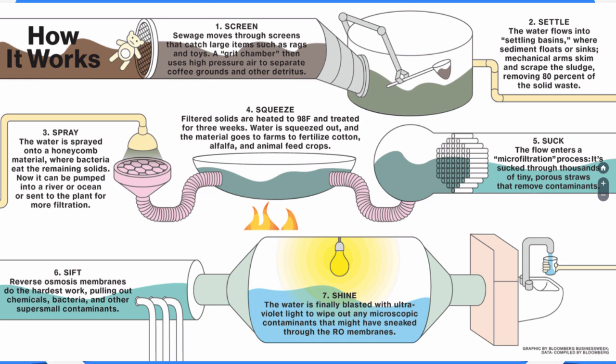If the water goes back to a plant rather than into rivers or oceans, the next step is the squeeze step. All the filtered solids are heated up to 98 degrees Fahrenheit and treated for three weeks. As the water hangs out here, it gets squeezed out, and the remaining material goes to farms to fertilize cotton or feed animals. At this stage it's clean enough for agricultural use.